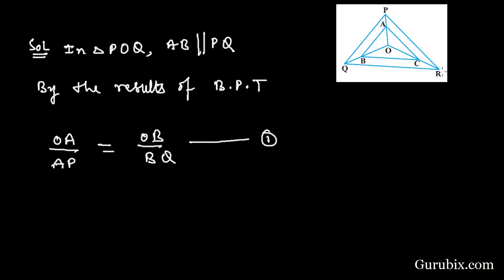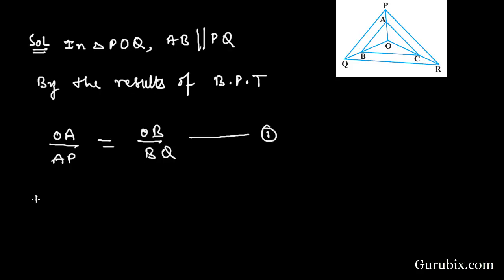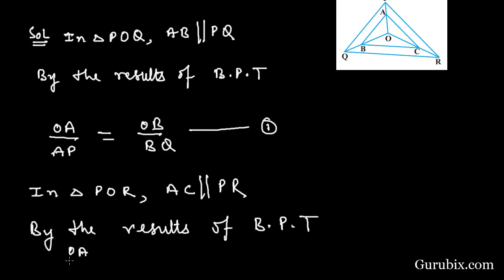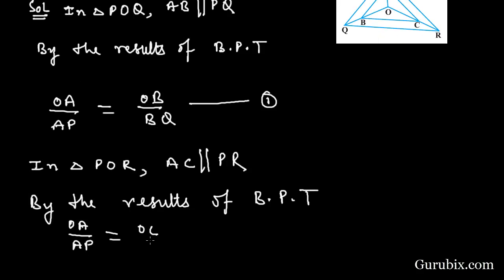Now we shall move to triangle POR. In triangle POR, we are given AC is parallel to PR. So by the results of BPT, OA over AP equals OC over CR. This is our equation number two.